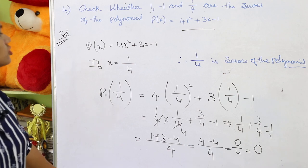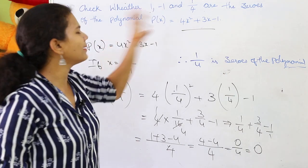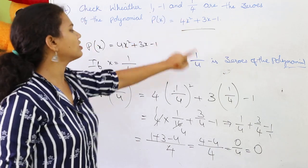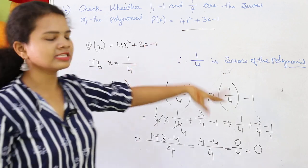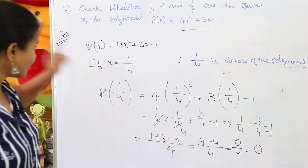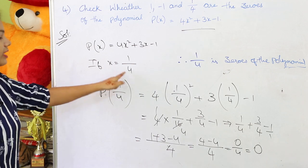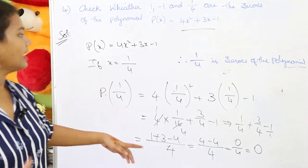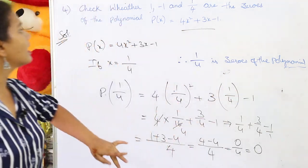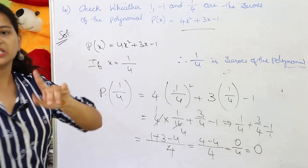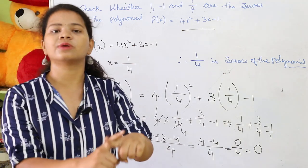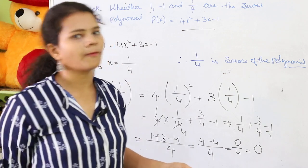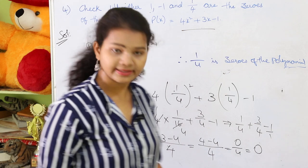To summarize: if x = -1, we got 0, so -1 is a zero of the polynomial. If x = 1/4, we got 0, so 1/4 is also a zero of the polynomial. But if x = 1, we got 6, so positive 1 is not a zero of the polynomial.